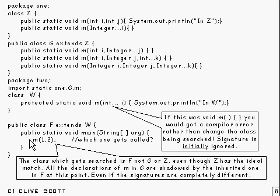If you want to call this method up here, you can do it if you give a fully qualified name. So that would have to be one.g.m followed by that parameter list. That would call that up there.